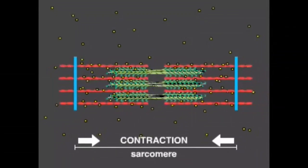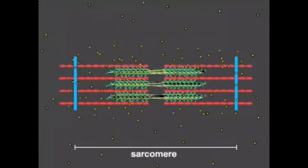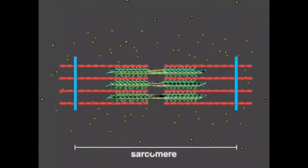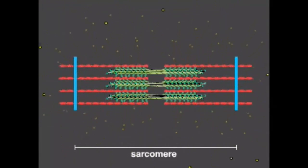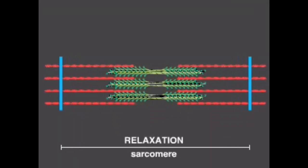Calcium is then quickly returned to the sarcoplasmic reticulum by the action of a calcium pump. Without calcium, myosin releases actin, and the filaments slide back to their original positions.